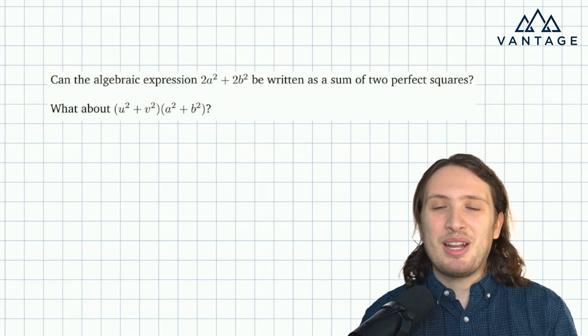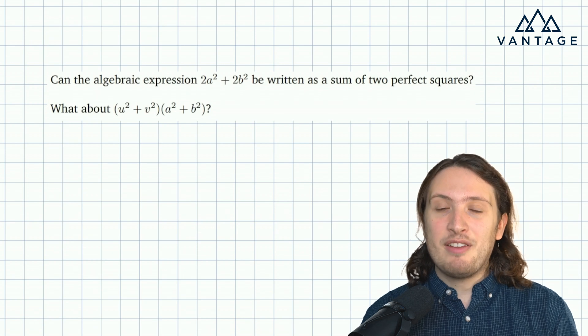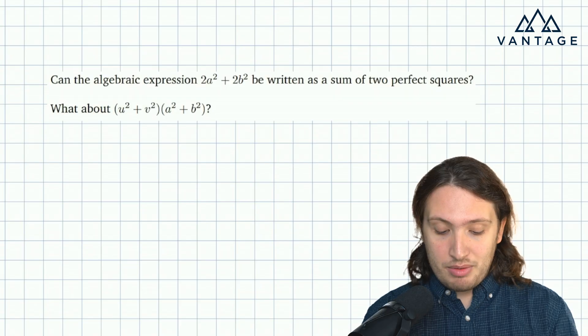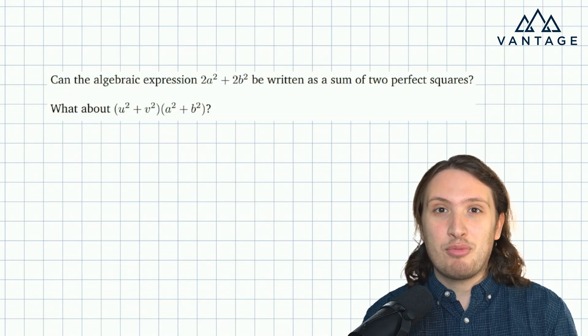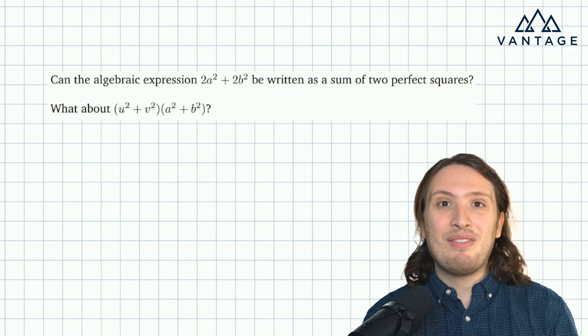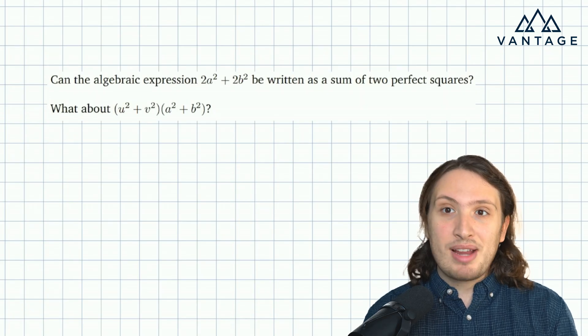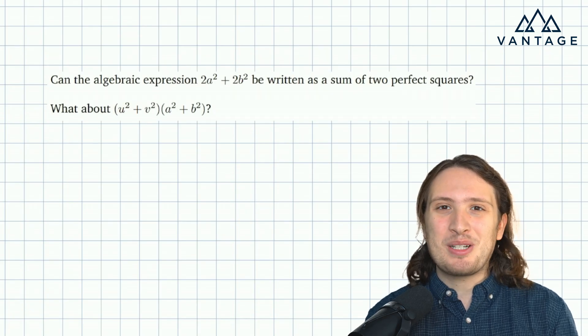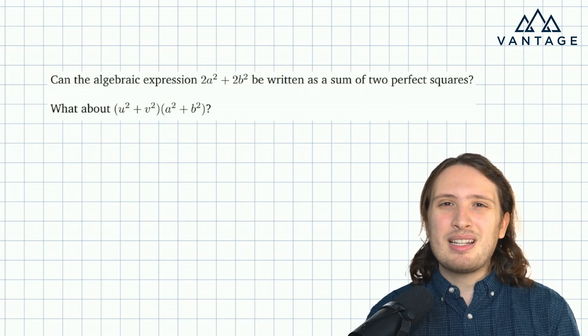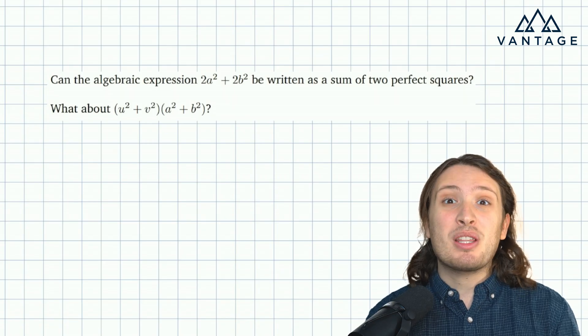But maybe we should start by trying to find a way to write it as a sum of two squares. And then if we really can't seem to find two, then we might think about whether we can construct a proof why it can't be done. So they're not looking in an interview for us to have any sort of superhuman algebra abilities. They're not expecting us to be able to magically spot really complicated multi-term algebraic factorizations without writing any workings. They're looking to see, can we break down a problem? Can we think systematically? Can we come up with a good strategy?